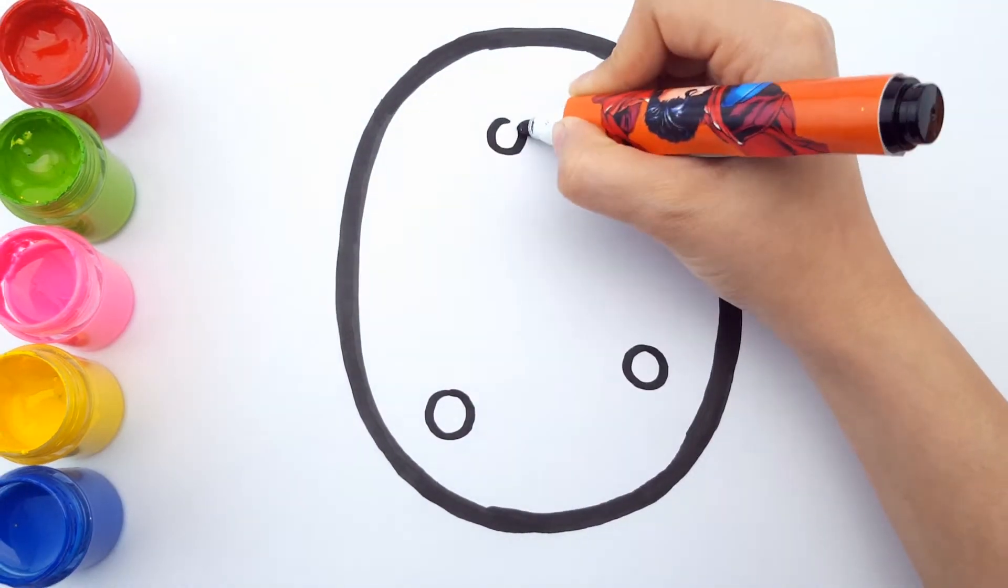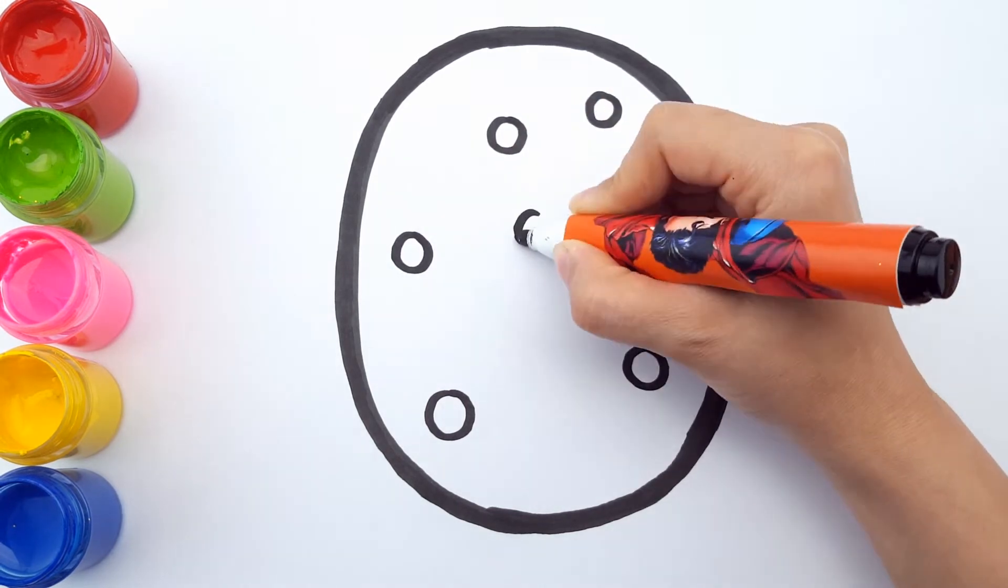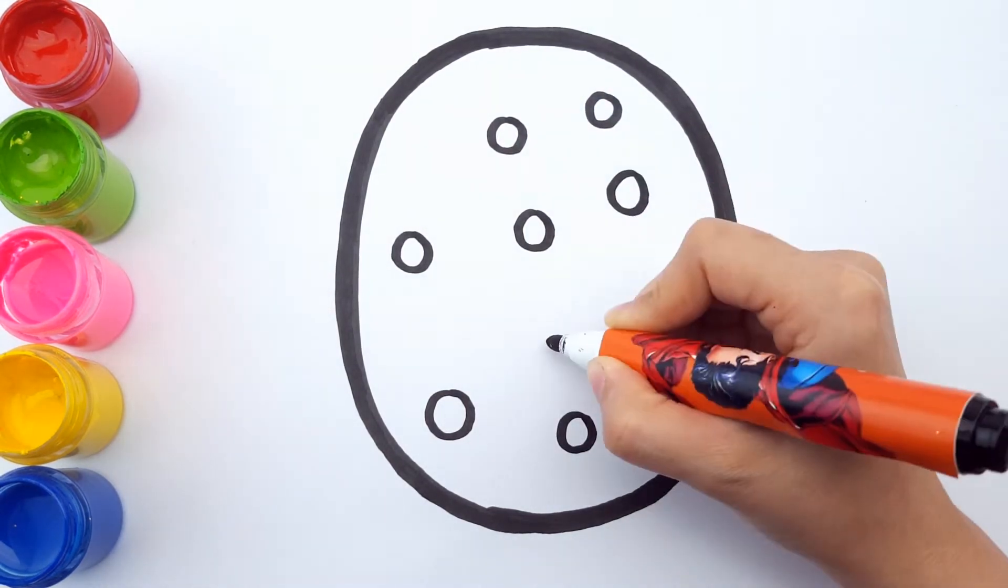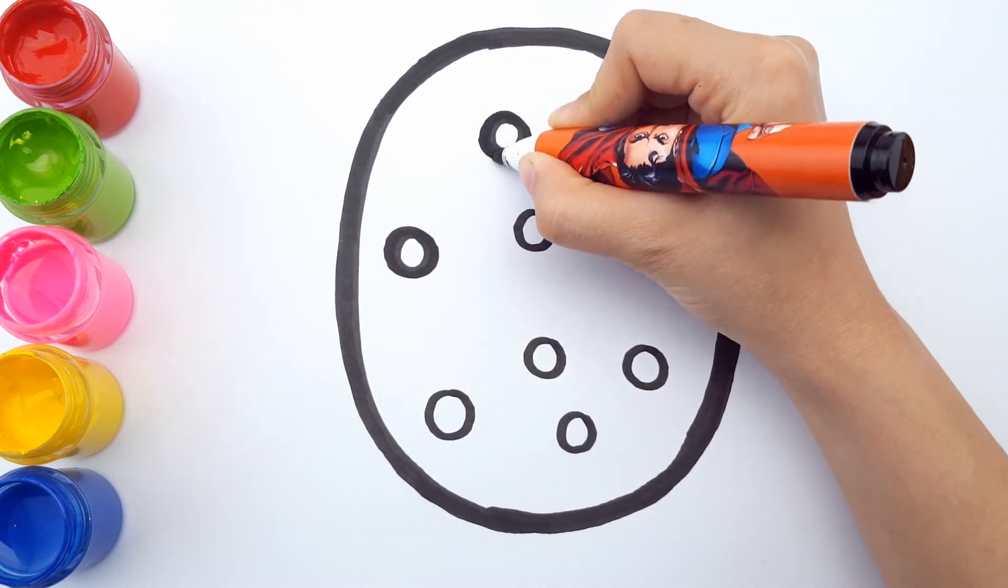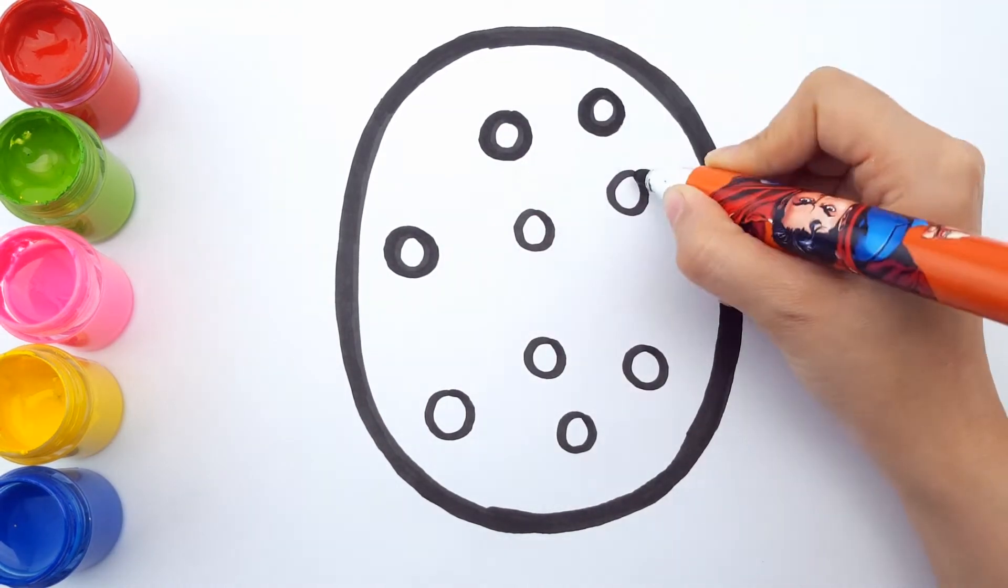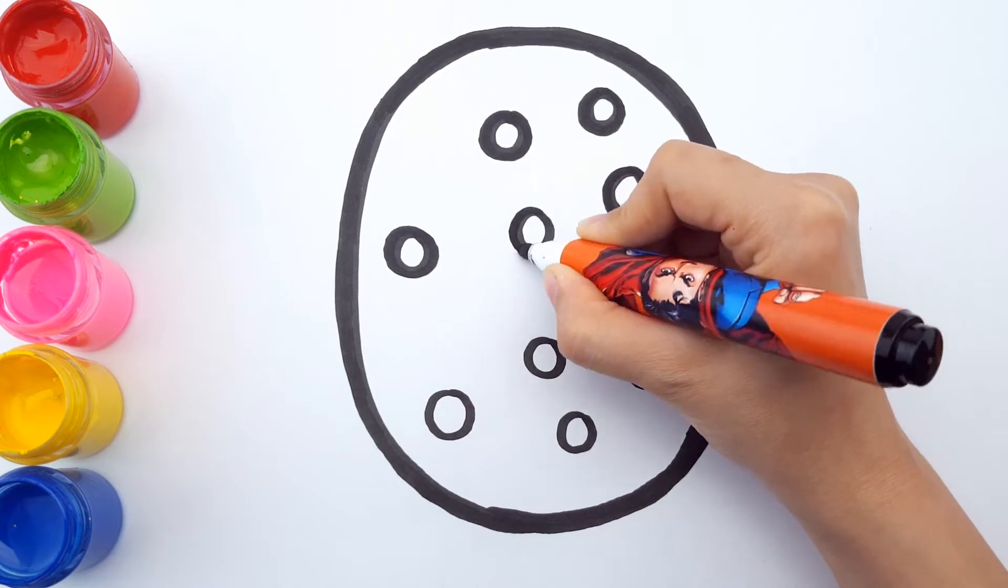Next let's add some circles, tiny circles for decorations. Let's cover these circles in big bold lines as well.